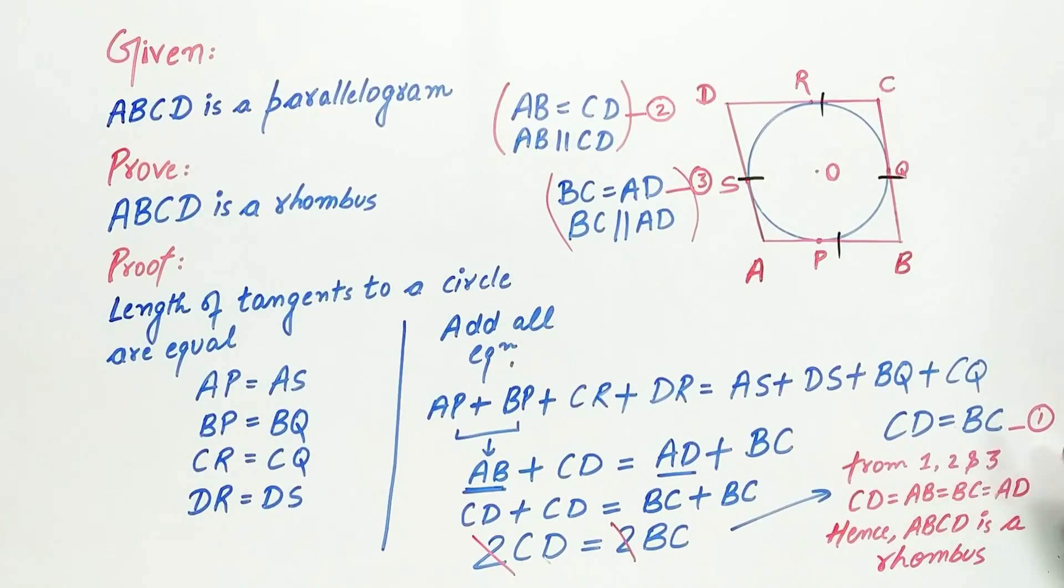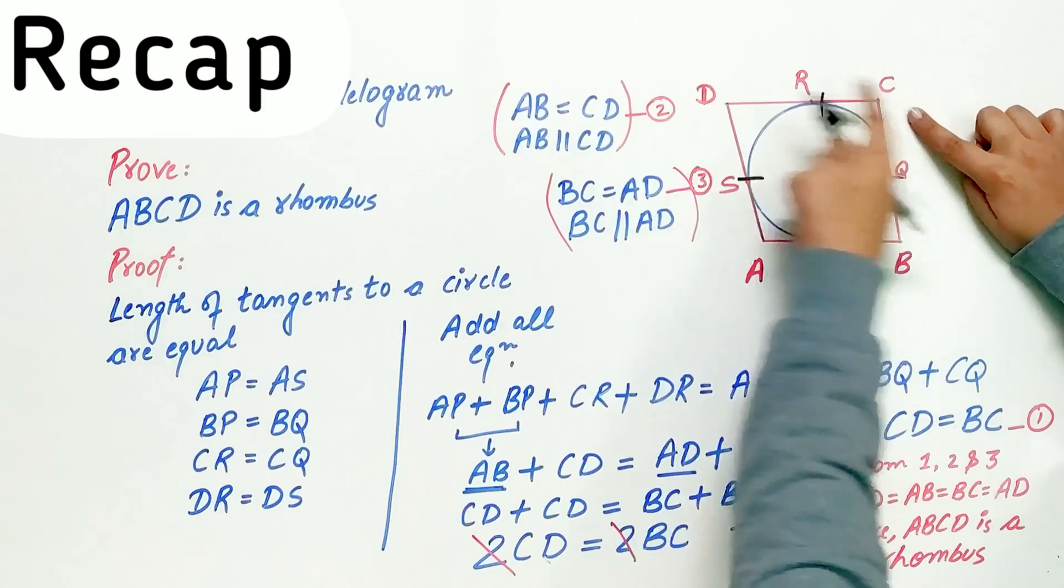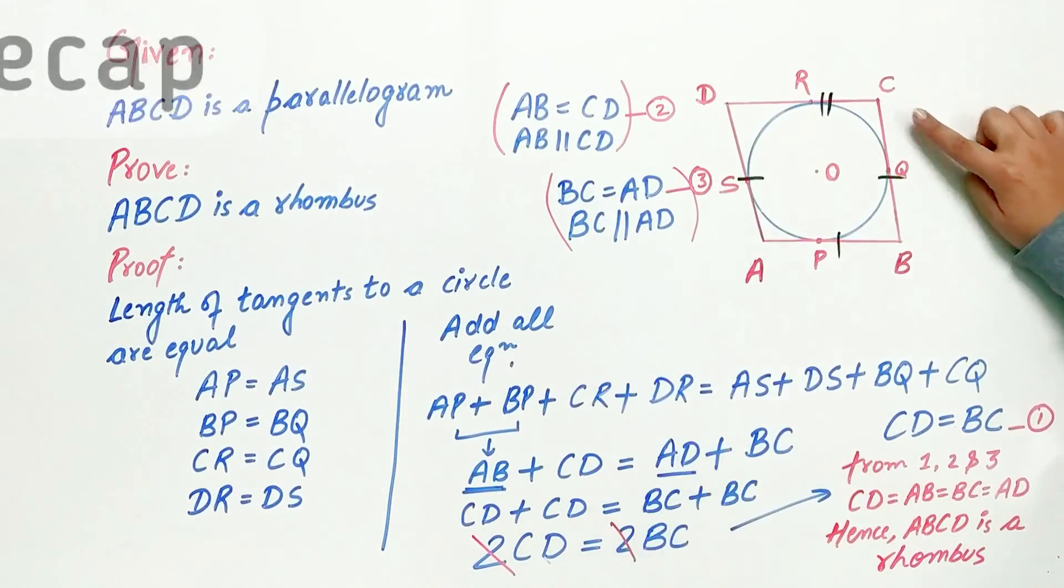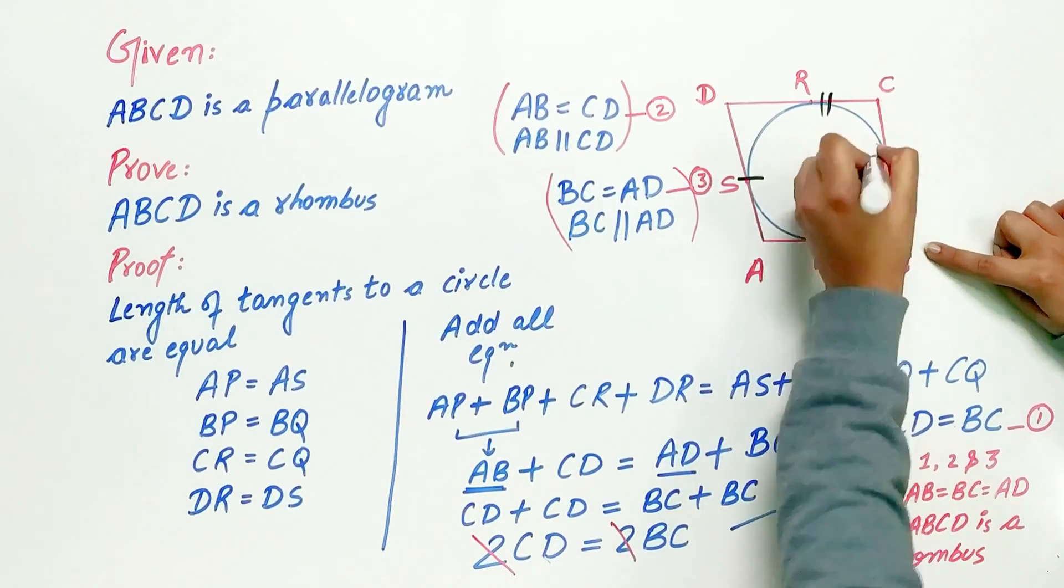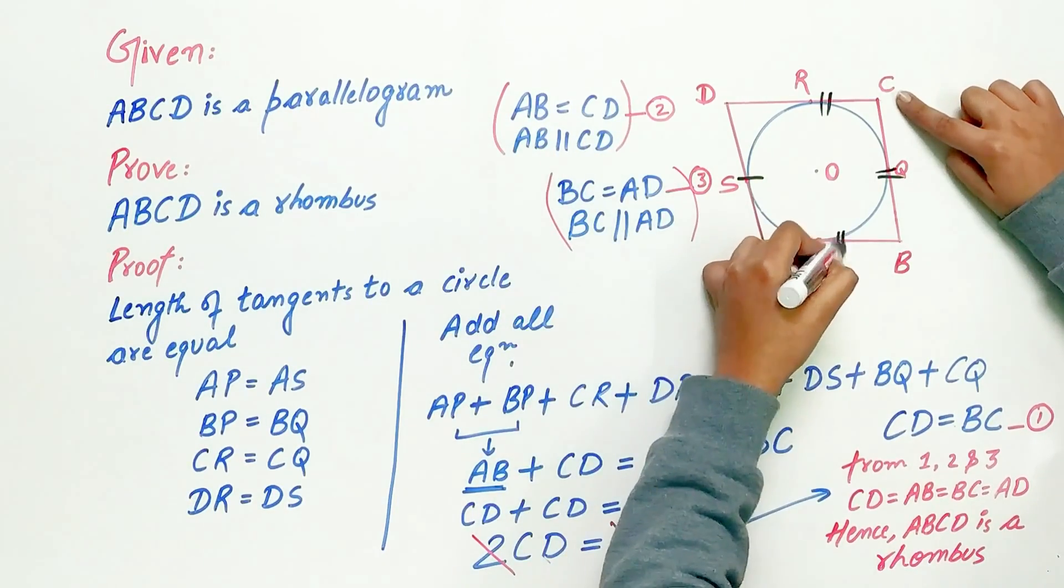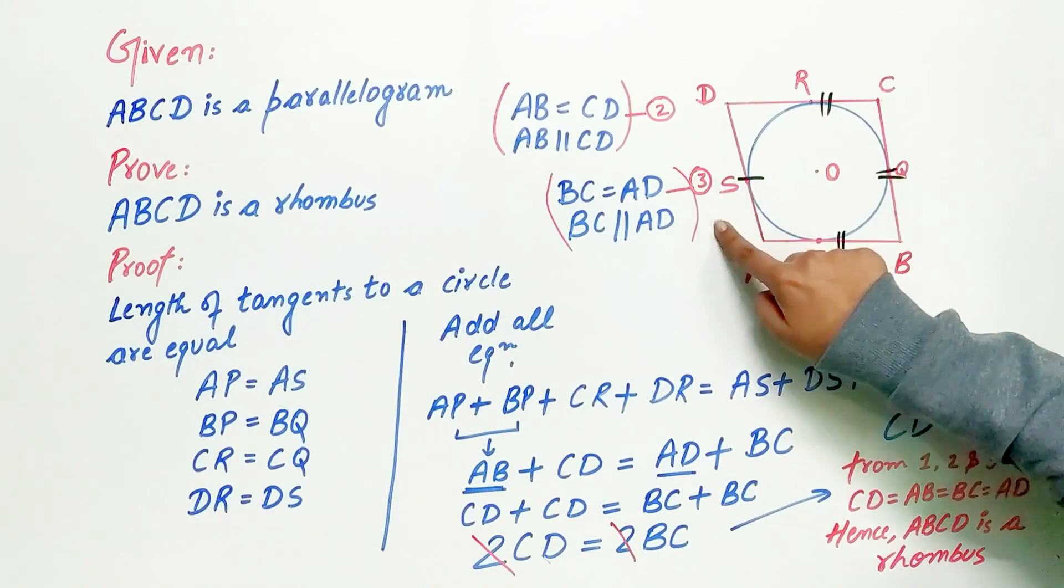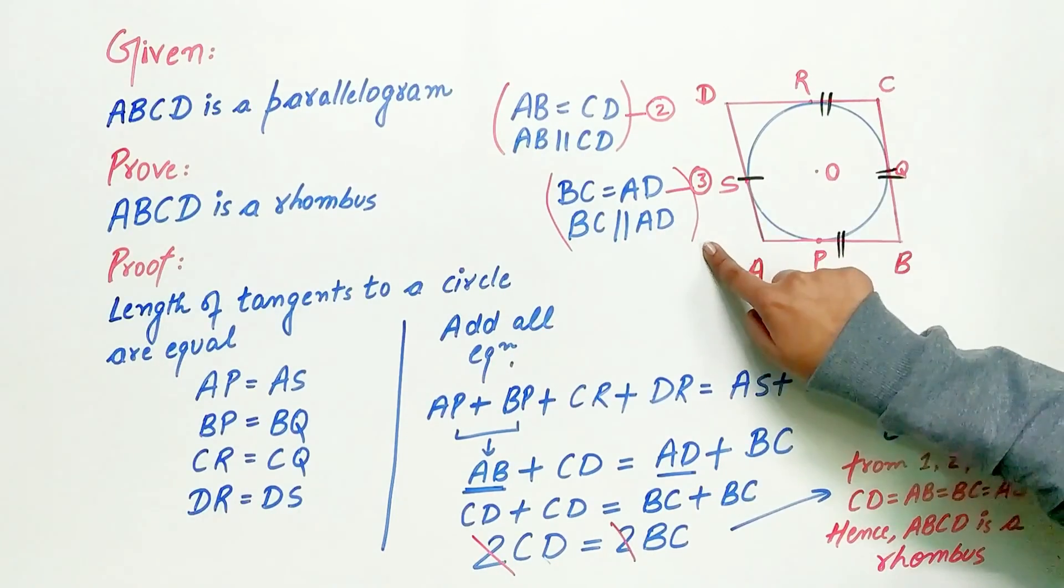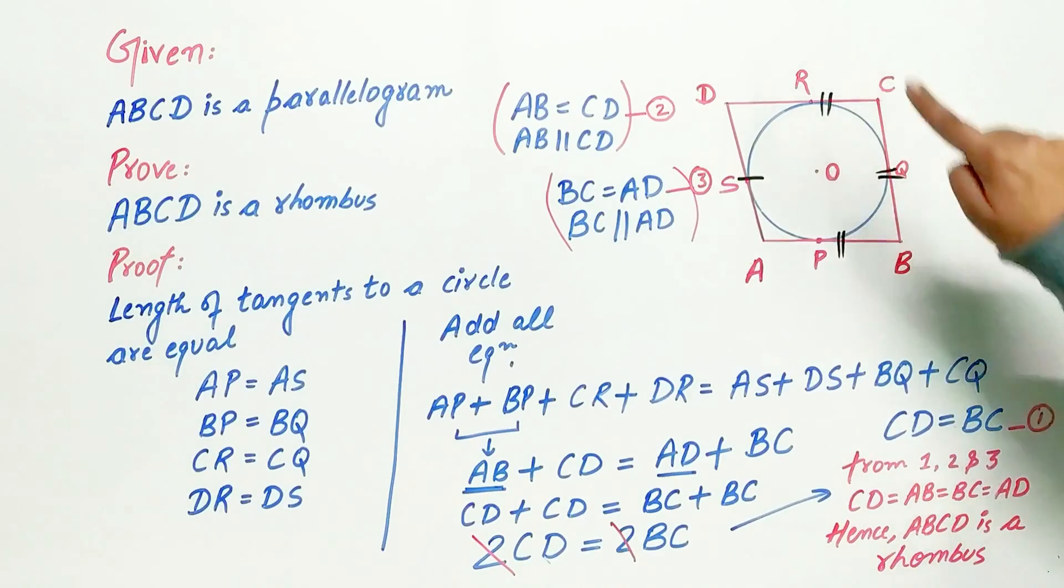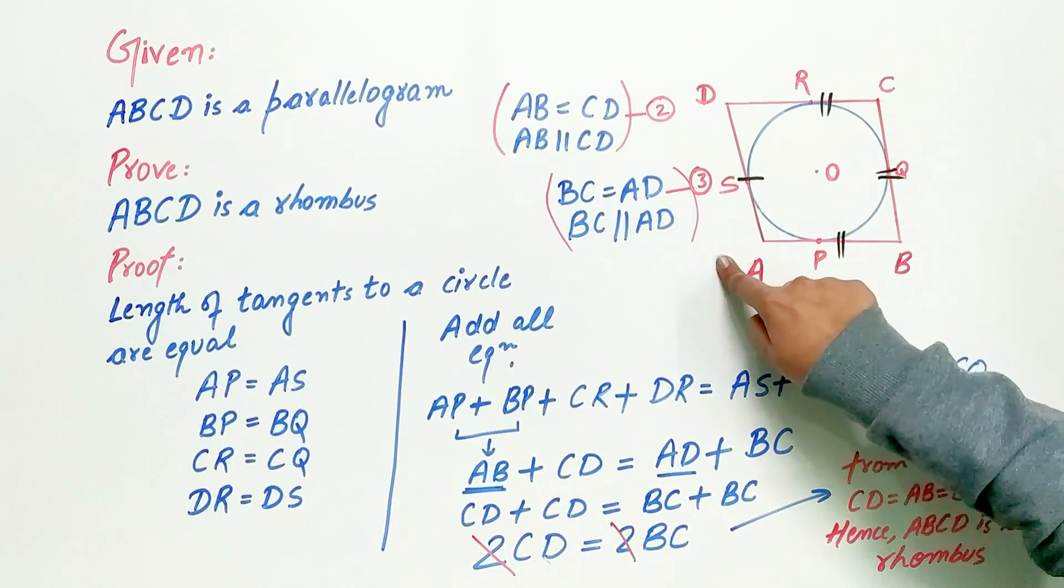Now, try to understand this part. Since BC is equal to AD and CD is equal to BC, that means CD is also equal to AD. So from the first, second, and third relationships, we can conclude that all the four sides of the parallelogram are equal.